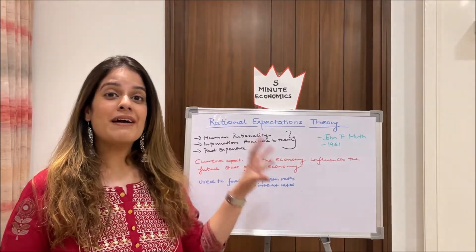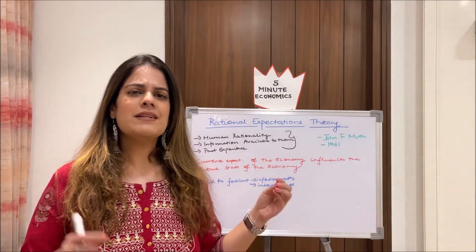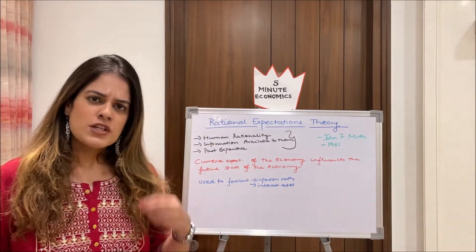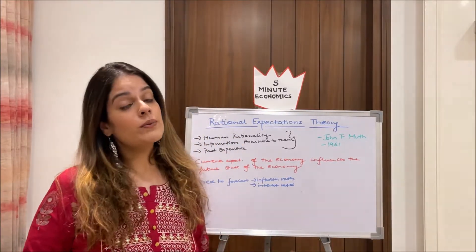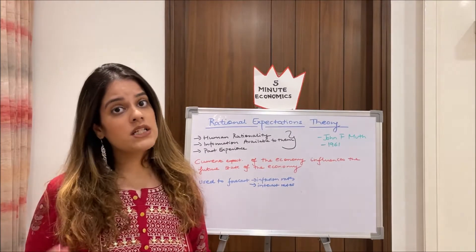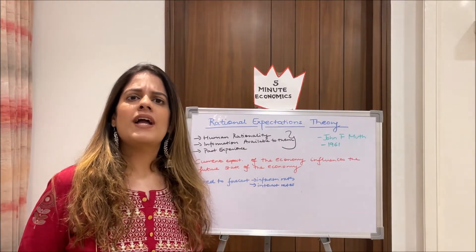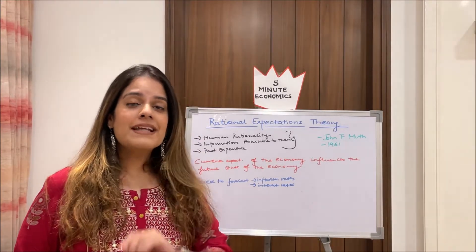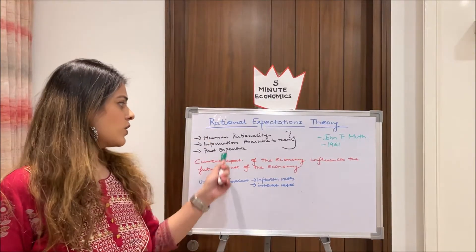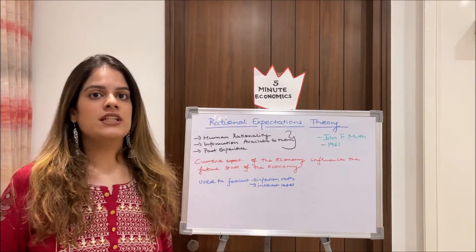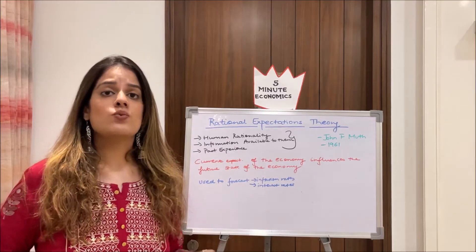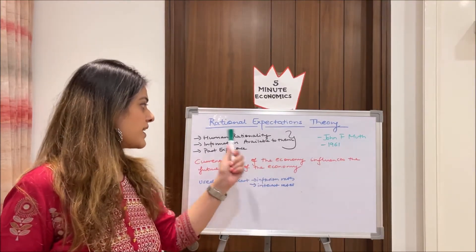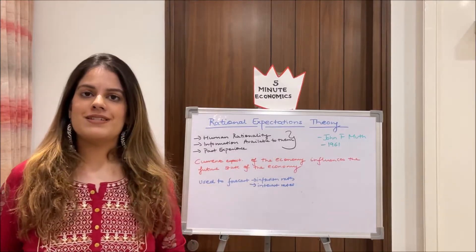Before moving to the macroeconomic point of view, let me give you a daily life example to help you better understand this theory. Whenever we take any decision in our daily life, we take into account our past experience, the current information we have, as well as the future. The crux of RATEX theory is that when a human takes a decision, they take into account human rationality, information available to them, and past experience.